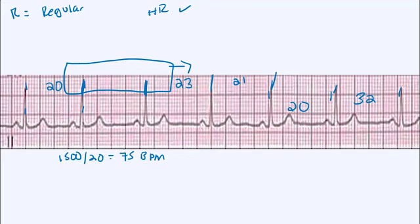In the third step, we need to look at the P to QRS ratio. Do we have one P wave followed by a QRS? And we do. Every single P wave on this strip is followed by a QRS.